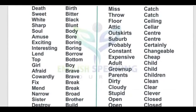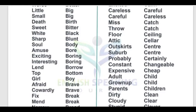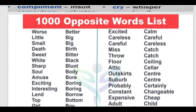Another hundred words — you can just read them: Worse – Better. Little – Big. Small – Big. Death – Birth. Sweet – Bitter. White – Black. Sharp – Blunt. Soul – Body. Amuse – Bore. Exciting – Boring. Lend – Borrow. Top – Bottom.